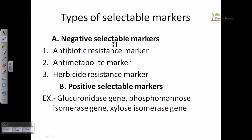There are two different types of markers: negative selectable markers and positive selectable markers. Among negative selectable markers, we have antibiotic-resistant markers, antimetabolite markers, and herbicide resistance markers. Among positive selectable markers, there are the glucuronidase (GUS) gene, xylose isomerase gene, and phosphomannose isomerase gene.